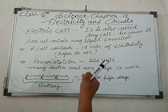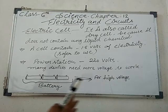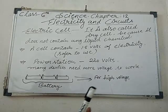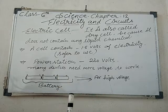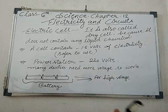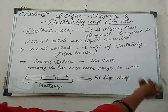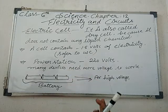So we are using the bulb, we can use the torch with the help of one, two, or three cells. Some electronic toys also work with the help of two or three cells. That is safer to use. But what about appliances that require much more voltage to work properly? Many devices need more voltage to work.